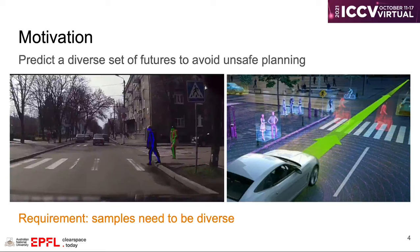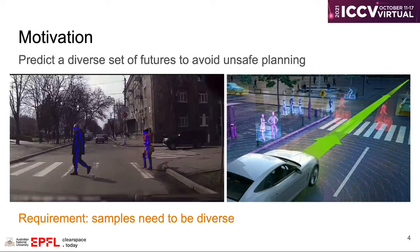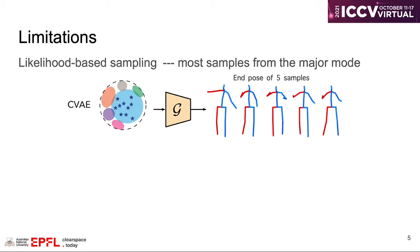an autonomous vehicle should be aware that a nearby pedestrian can suddenly cross the road, even though the pedestrian will most likely remain in place.